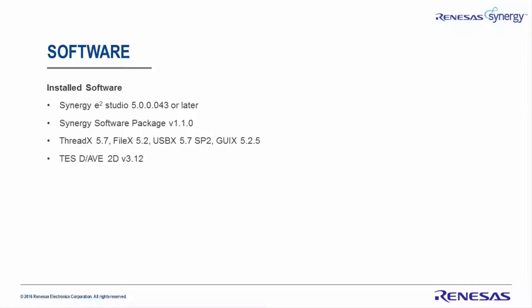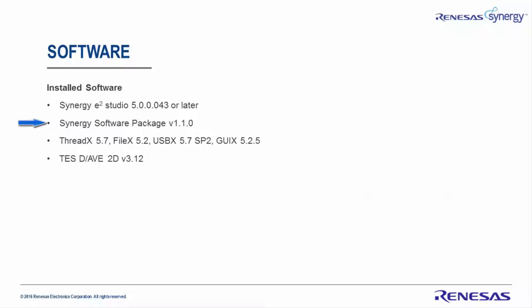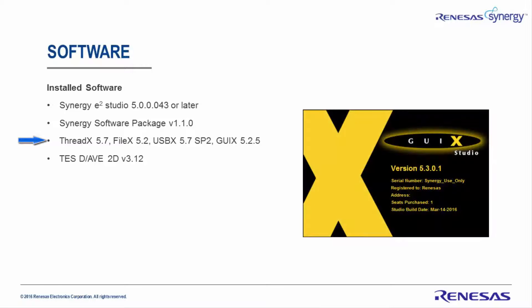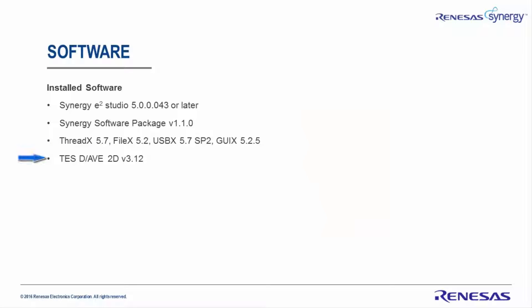Software requirements: Installed software should be the Synergy E-Squared Studio with a release of 5.0 or later, Synergy Software Package version 1.1 or later, ThreadX version 5.7, FileX version 5.2, USBX version 5.7 SP2, and GUI-X 5.2. We will also use the test DAV2D version 3.12.